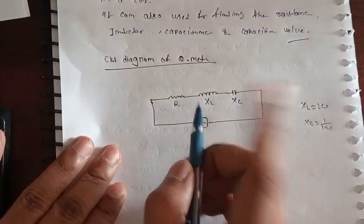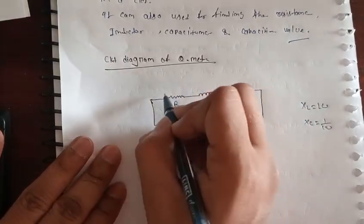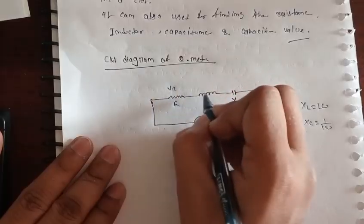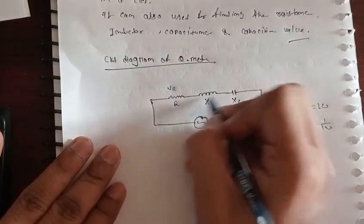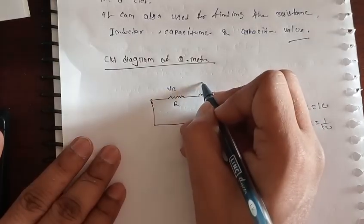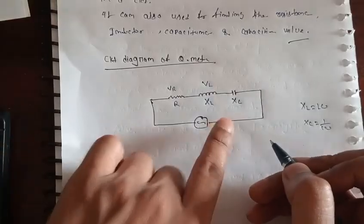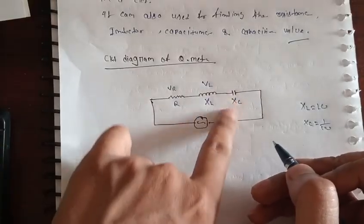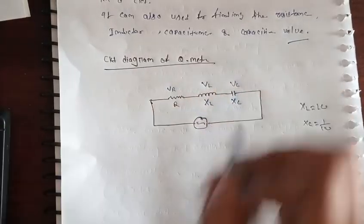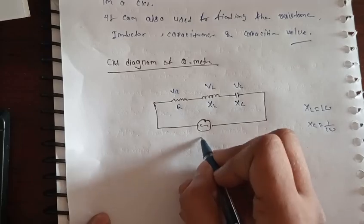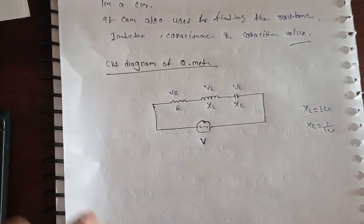The voltage across the resistance is Vr, the voltage across the inductor is Vl, the voltage across the capacitor is Vc, and the main power supply is V volts.